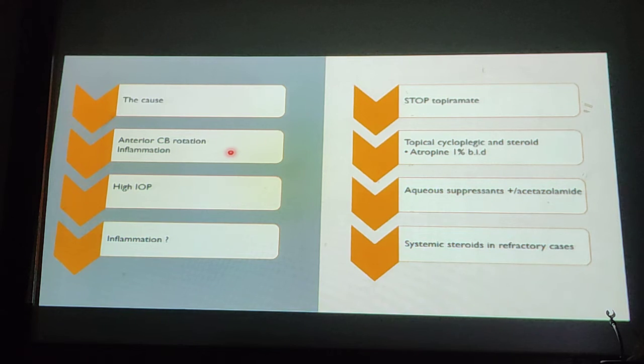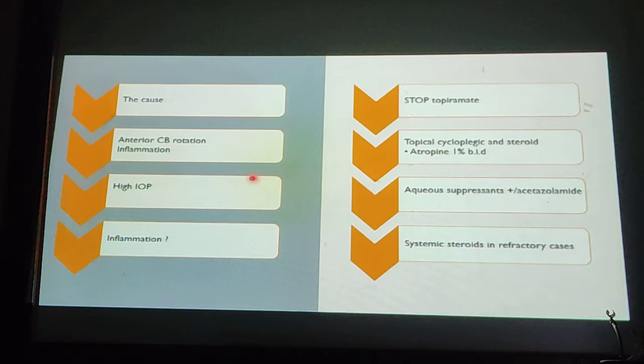Second, it's because of anterior ciliary body rotation, so give a topical cycloplegic. It's an inflammatory process, so give steroids. The patient has high IOP, so give topical antiglaucoma medications plus or minus systemic. It's an inflammatory process; if it's refractory, then give systemic IV steroids, usually 250 mg every 6 hours.